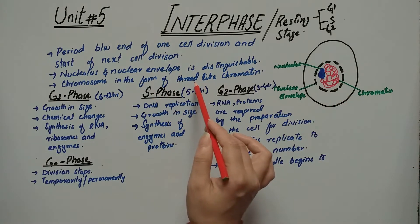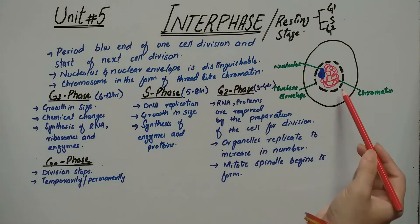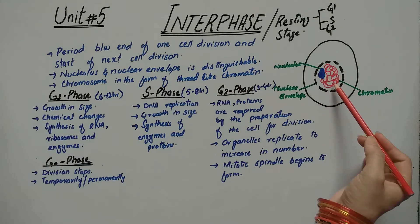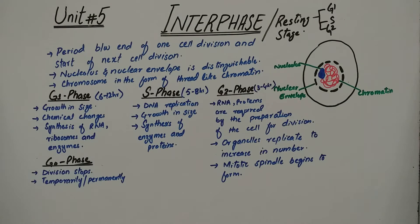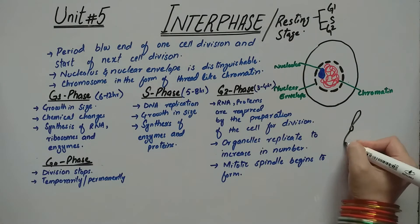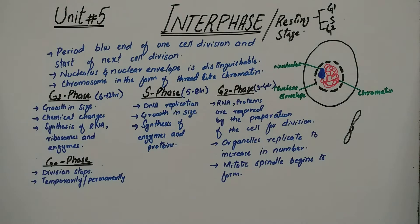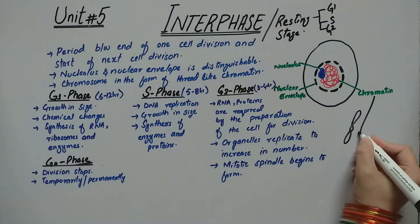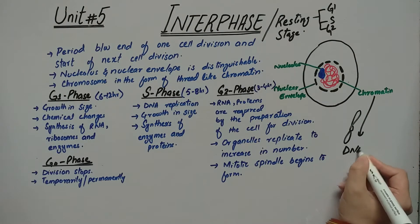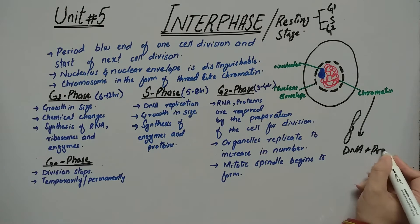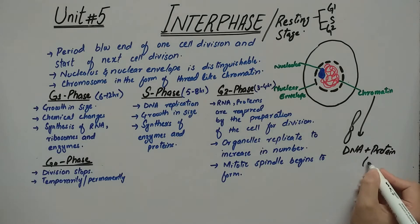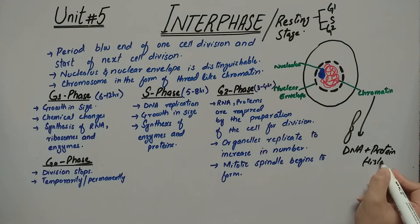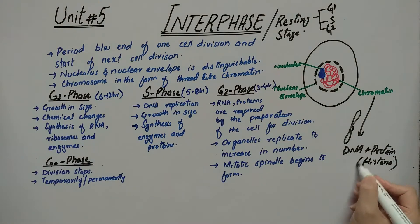What is the chromosome in this form during interphase? The chromosomes will be in the form of thread-like chromatin. The chromosome structure is not condensed but exists as a thread-like structure called chromatin. Chromatin is made up of DNA plus protein — specifically histone protein.